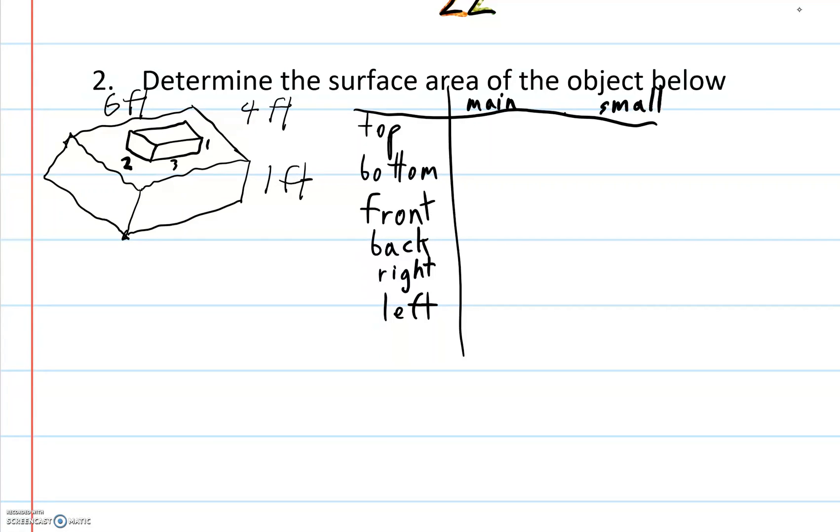So for my main one, I'm looking for the top. That's what's inside this square. How big is that? That's 6 by 4, so 6 times 4, which equals 24. And my bottom is going to be identical to that, 6 times 4, 6 times 4 equals 24. Bottom and the top are going to be the same.